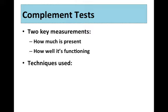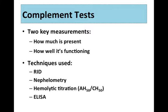There's a series of different techniques that we can use to monitor these two things: RID (radial immunodiffusion), nephelometry, hemolytic titration, and the ELISA test. Let's take a closer look at these.